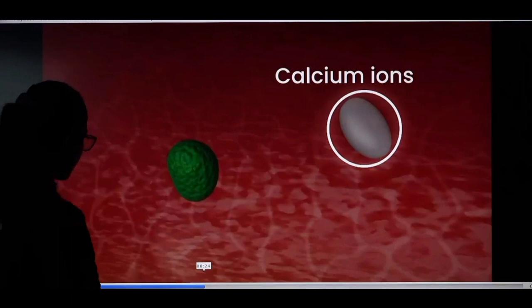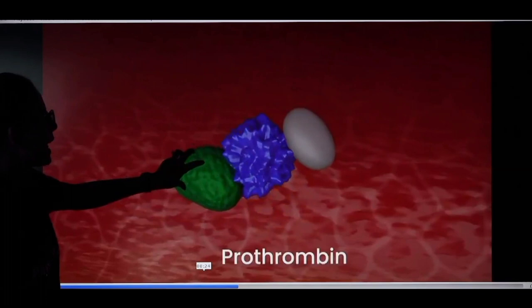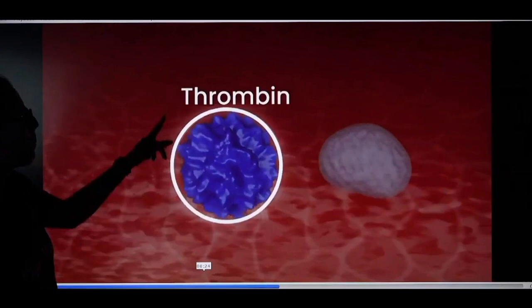With the help of calcium, it will be called thrombokinase. You will convert thrombokinase, prothrombin to thrombin. Thrombin is formed. It will convert the fibrinogen to fibrin.